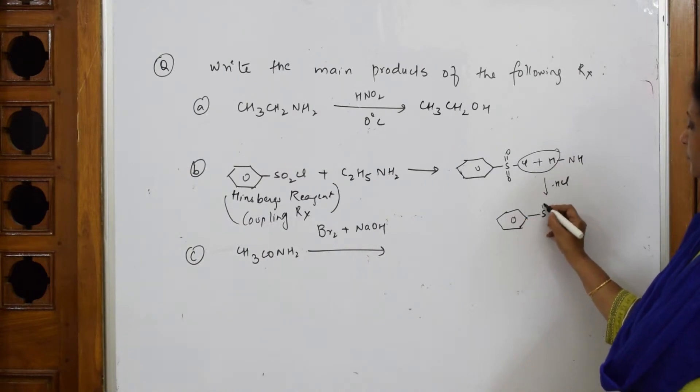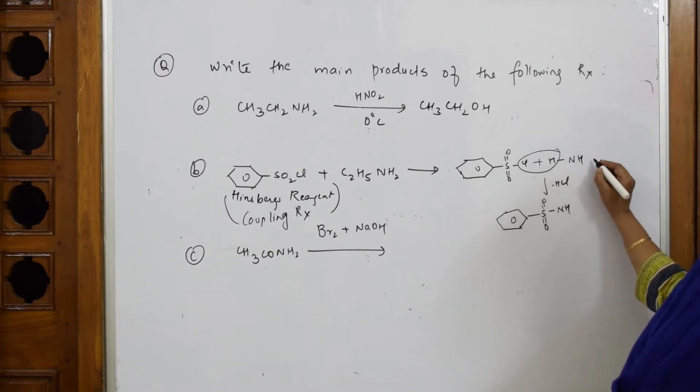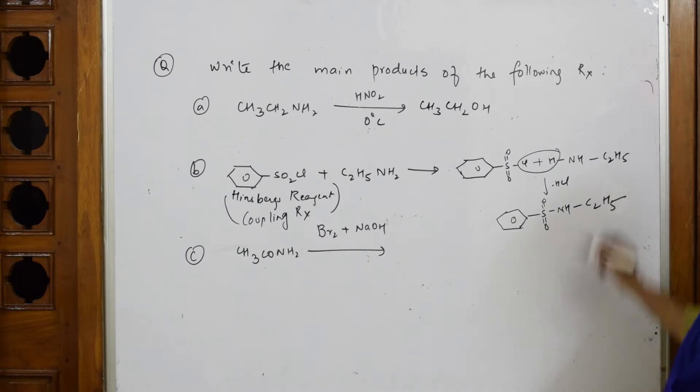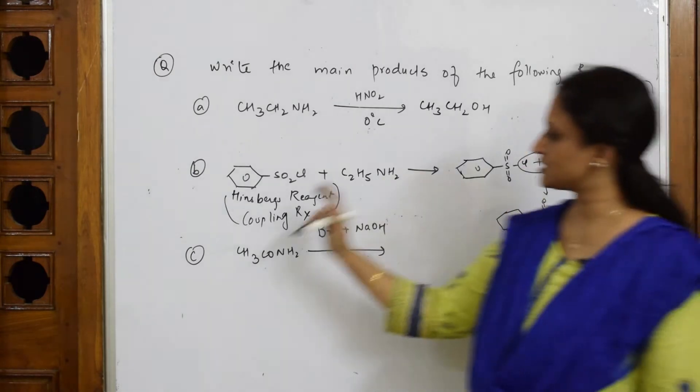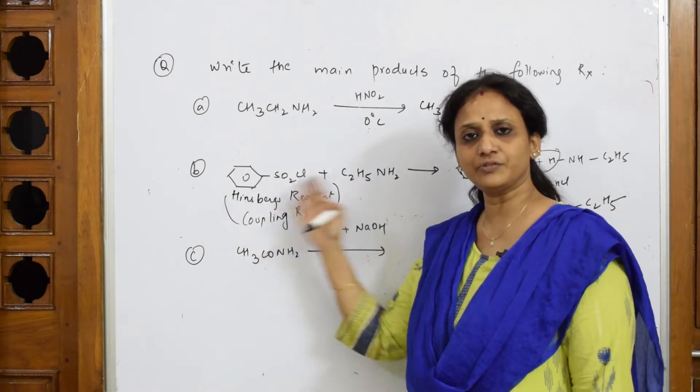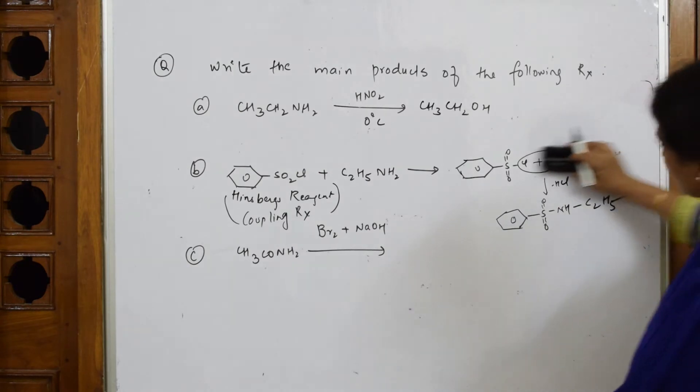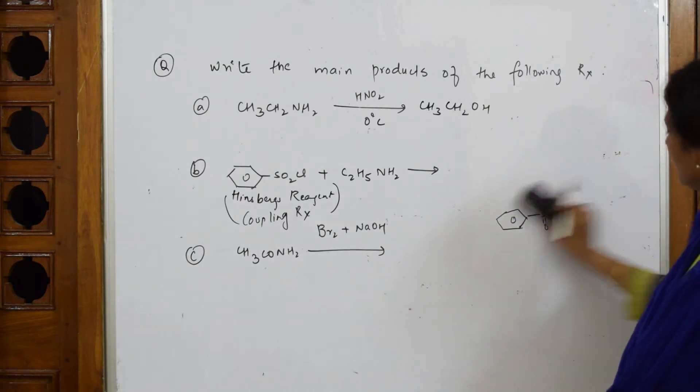Benzene ring with SO2 and NH. There is C2H5 also, isn't it? I should not forget that C2H5. This is your product. So simple, isn't it? So just whenever you see such, if you see aniline here or phenol here, you have to do coupling reaction. Let us erase everything and write the main product here.